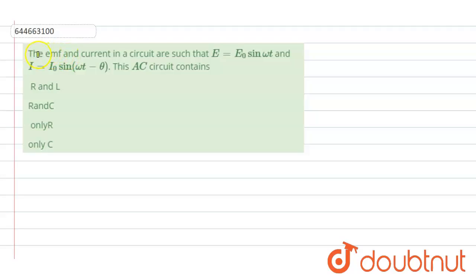Hello students, so the question is: the EMF and the current in circuit are such that E equals E naught sine omega t and I equals I naught sine omega t minus theta. This AC circuit contains.